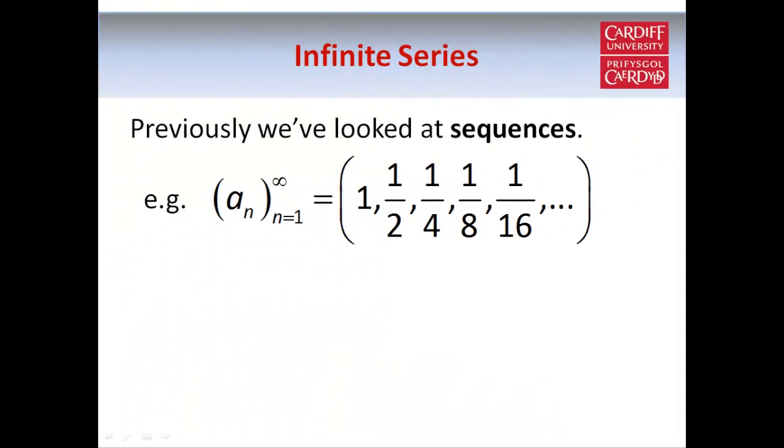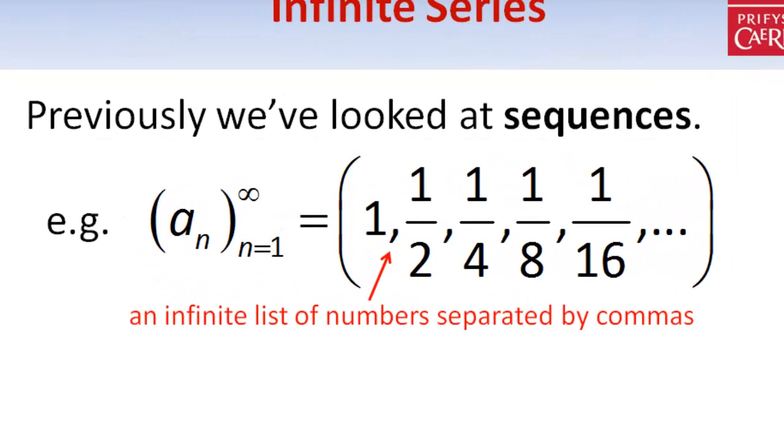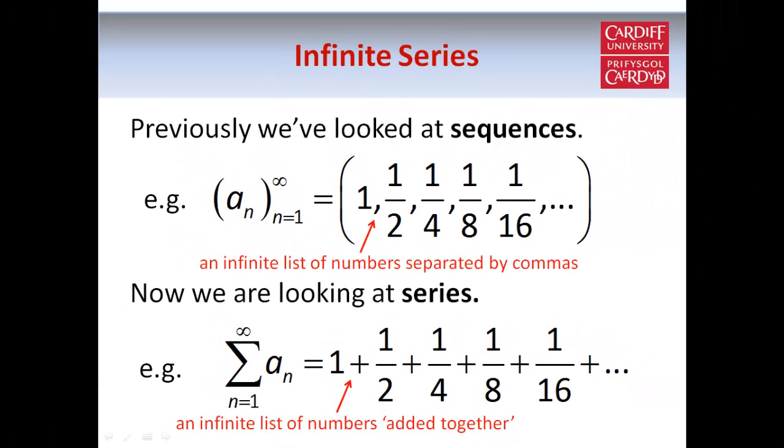Let's start off by making sure we're clear about the difference between a sequence and a series. In a sequence we have an infinite list of terms or numbers separated by commas, and that's basically all there is to it, it's just an ordered list of numbers. In a series we also have infinitely many terms, but this time the terms are added together, so essentially the difference is that we now have plus signs instead of commas, so it's important not to get confused between sequences and series.